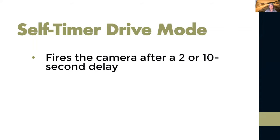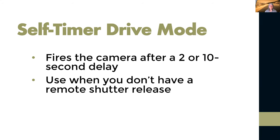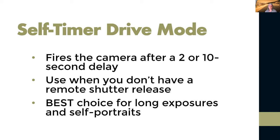Self-timer mode is where your camera, once you press the shutter button, has a delay of two to ten seconds. Great to use if you don't have a shutter release — for self-portraits where you want to get in the shot, or for any long exposure where you don't want to be touching the camera when the exposure happens. Set it to a two-second timer, press the button, and take your hands away. I've seen many times in workshops where someone presses the button with the timer on and still keeps their finger on the button — remember to take your finger off.